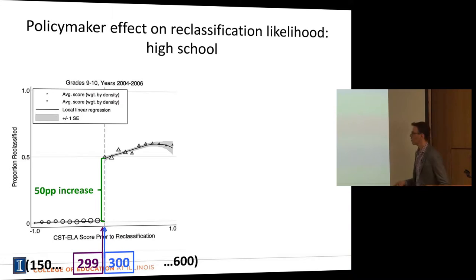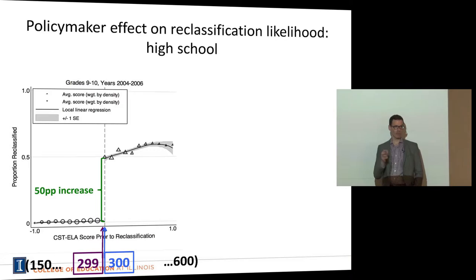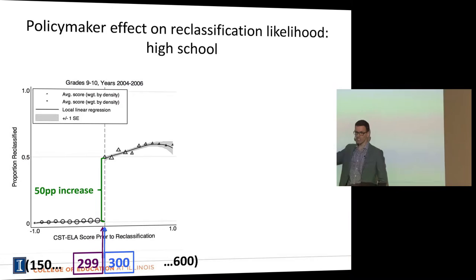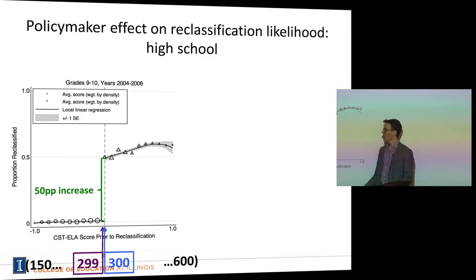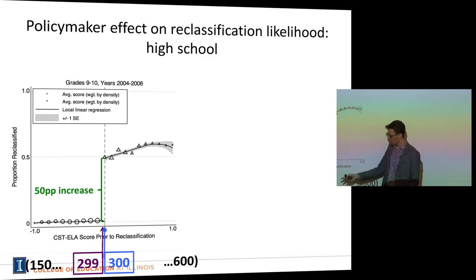In the pre-2007 period, for high school, we see a 50 percentage point increase in the likelihood of reclassification for getting the final criterion. Remember — these kids have already met four of the five criteria. Going from a 299 to a 300 on the final test — essentially getting one multiple-choice question correct — produces a huge increase in reclassification likelihood: kids with 299 have a zero percent chance, while kids with 300 have a 50 percent chance.